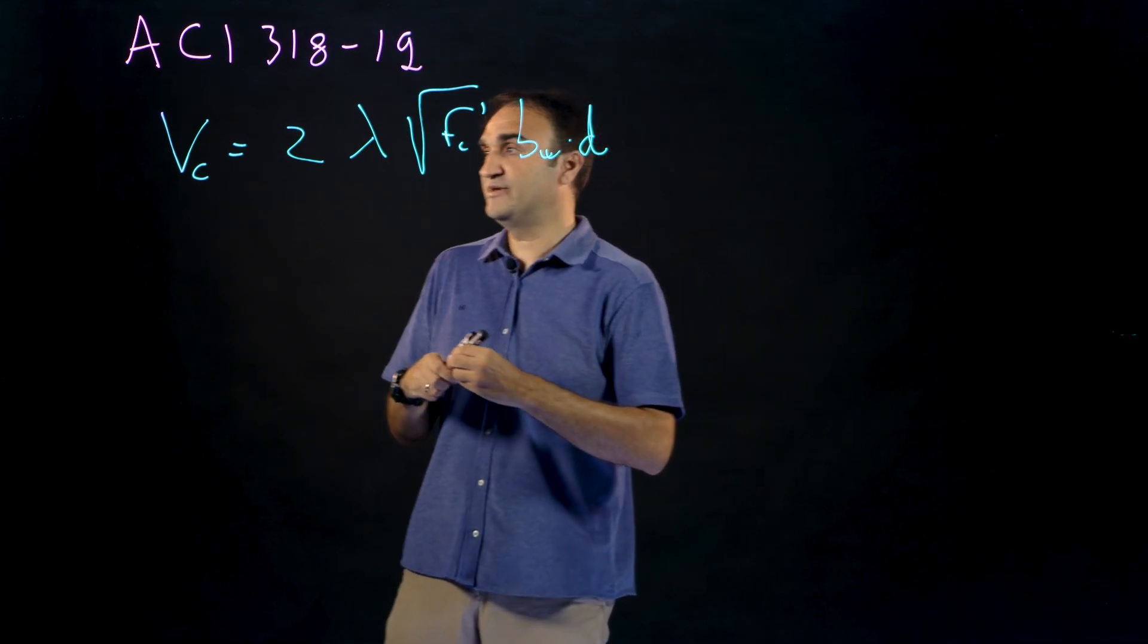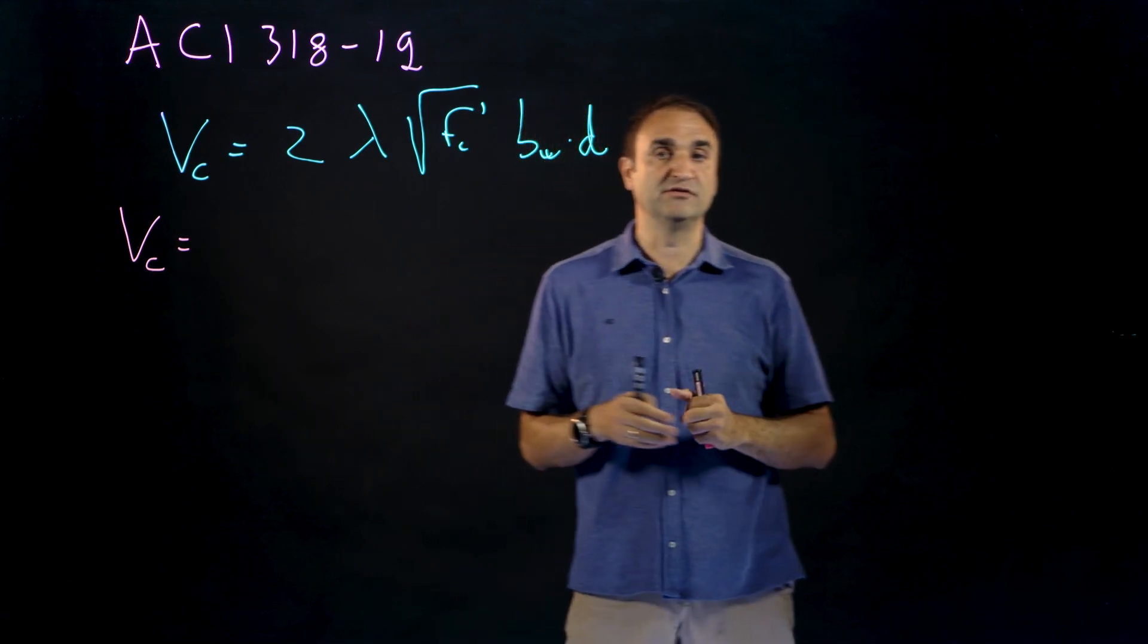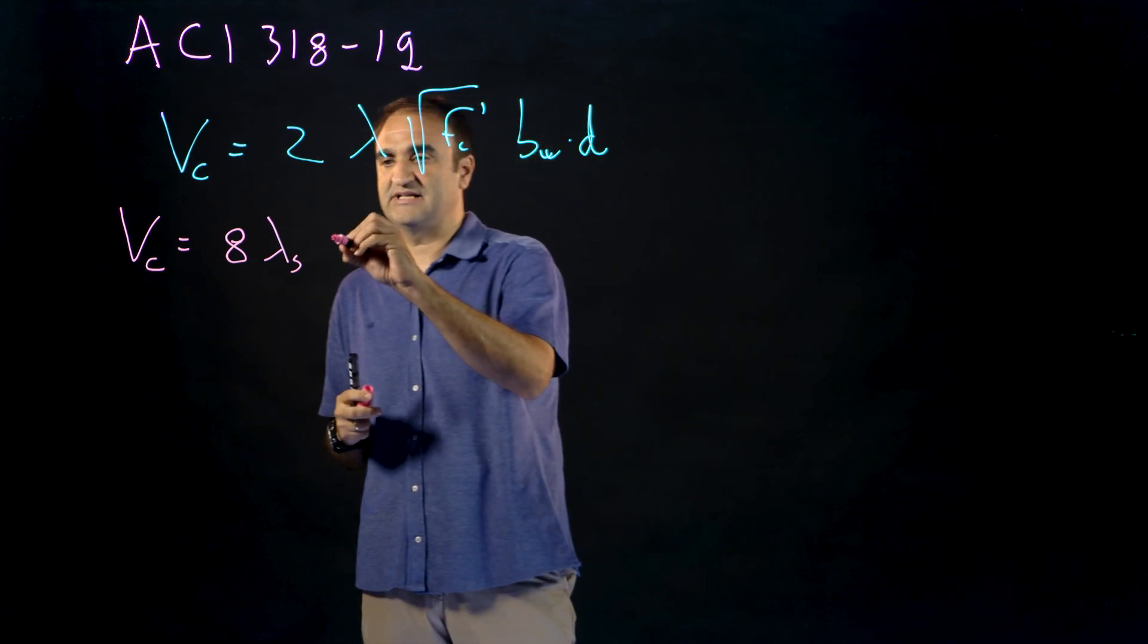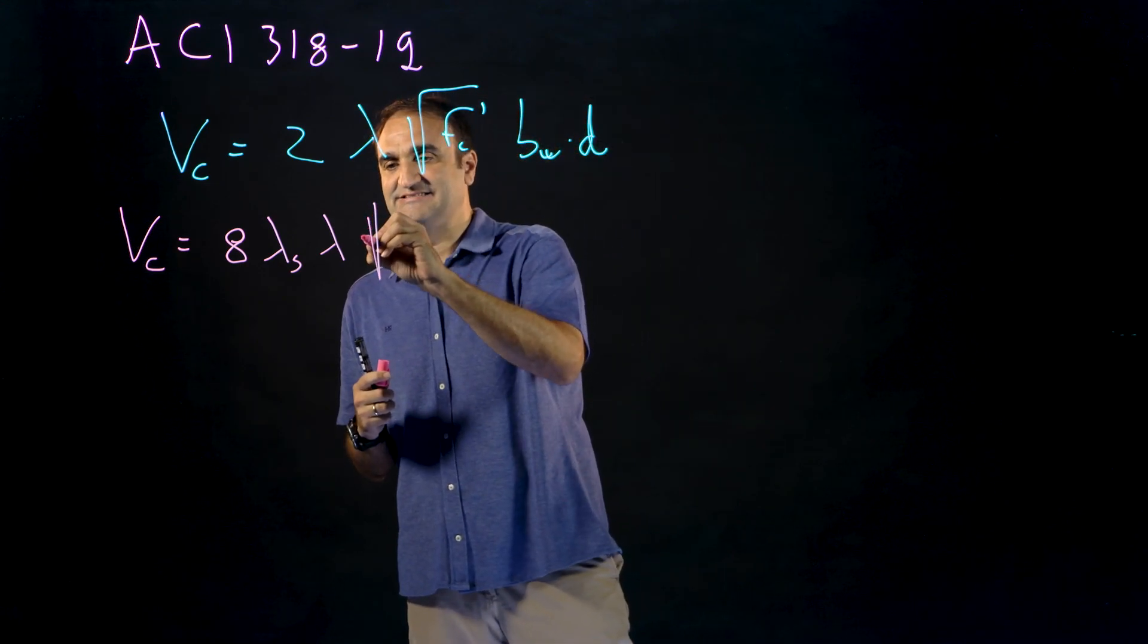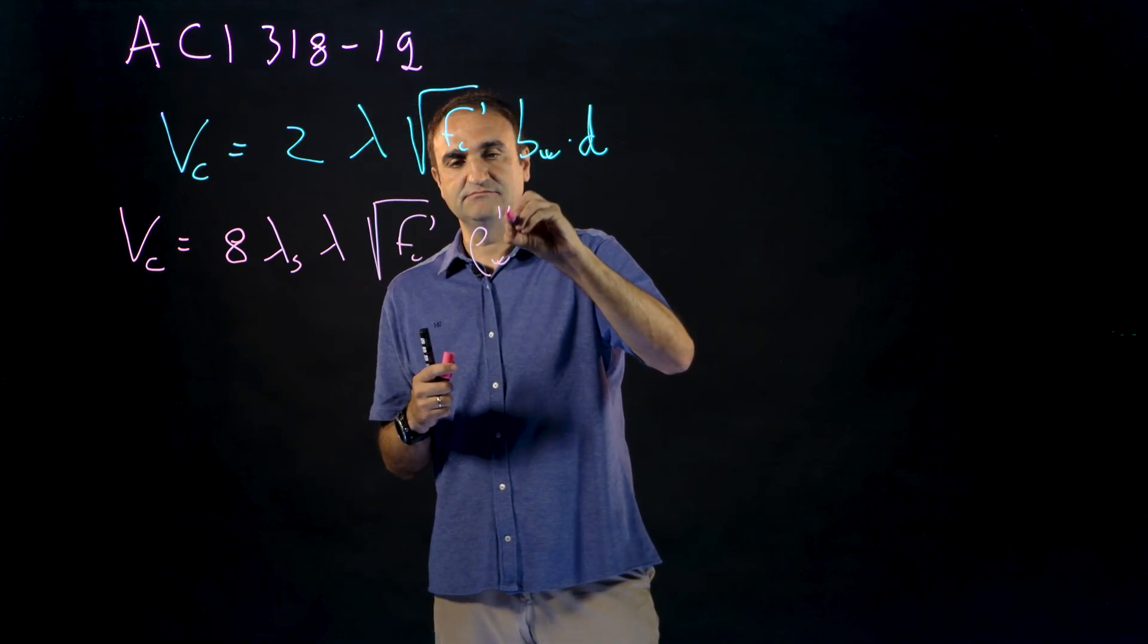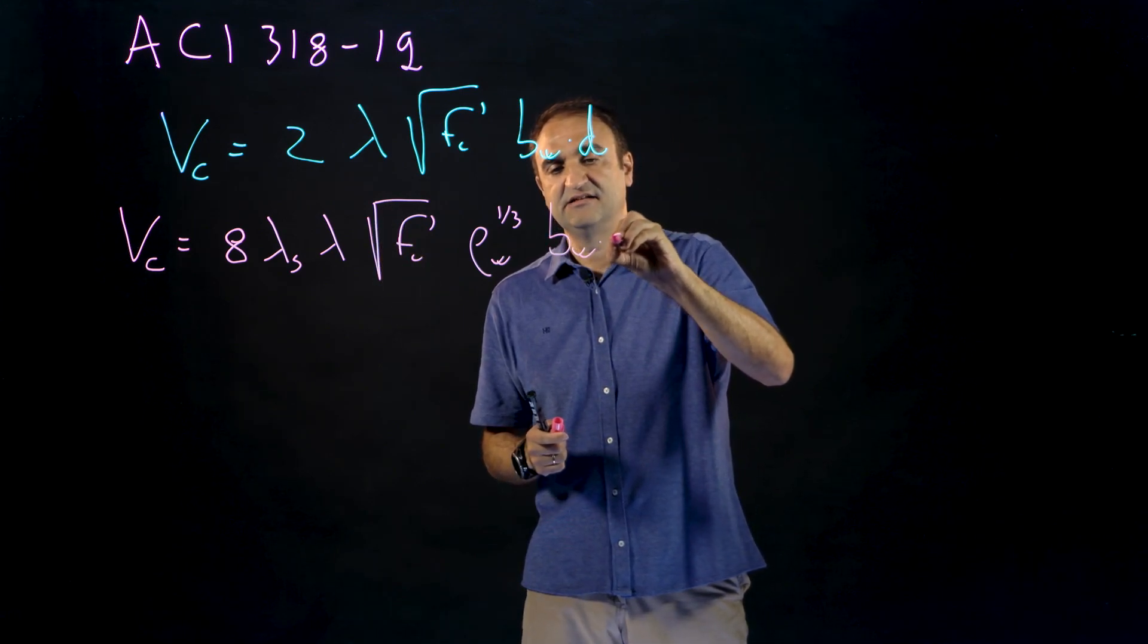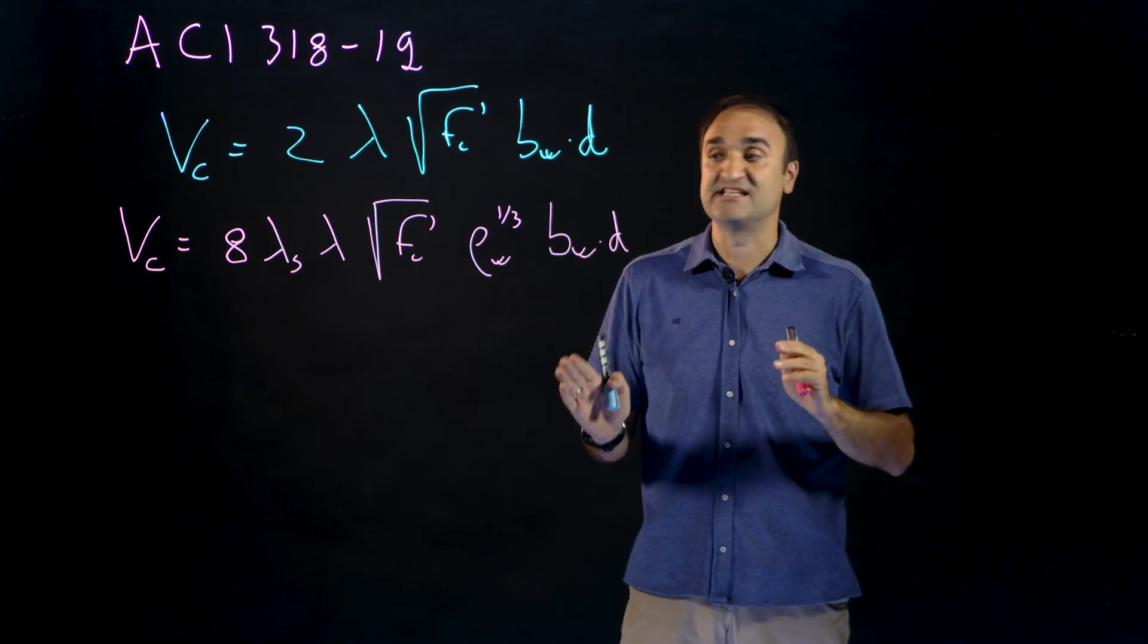So the new ACI provisions are that for members without a minimum amount of shear reinforcements, the concrete contribution is eight times a size effect factor, this is important, the modification factor for lightweight concrete and fc prime. Then this is very important, the influence of the longitudinal reinforcement, the tensile longitudinal reinforcement. This is all for reinforced concrete without axial loads. If you have axial loads you have to add another term that is additive.